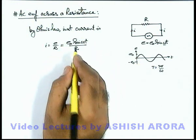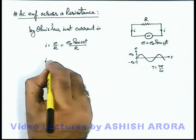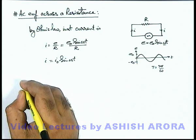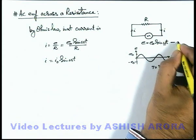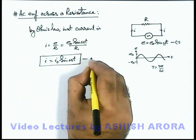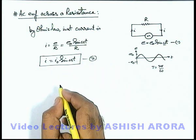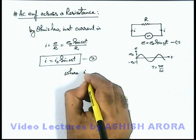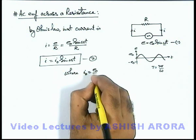Here we can write E naught by R as I naught, so current becomes I naught sine omega t. Say if this EMF we consider as equation 1 and this current which is flowing through the resistance is considered as equation 2, and we can write the current amplitude I naught here is given as E naught by R.